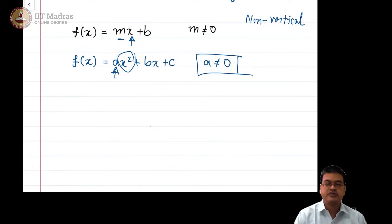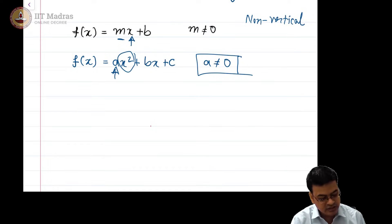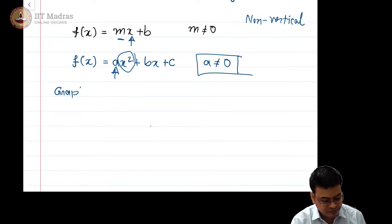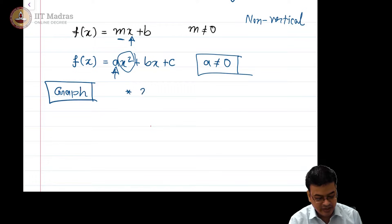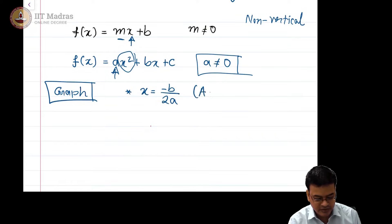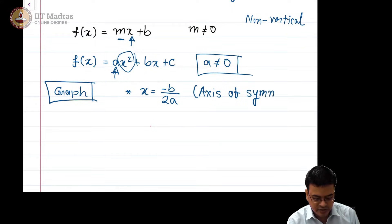The first thing that we studied in these sessions is how to graph the quadratic function. I gave you three tips. First, you find x = −b/2a, which will be called the axis of symmetry. We have already seen how to derive the equation of the axis of symmetry in some of the earlier videos.